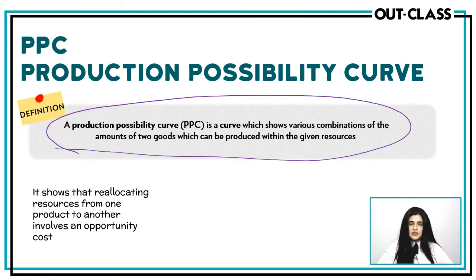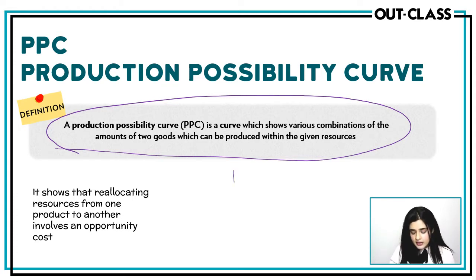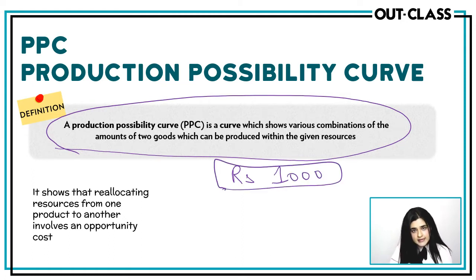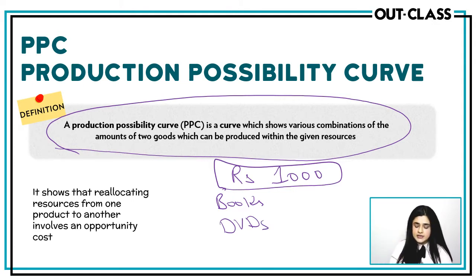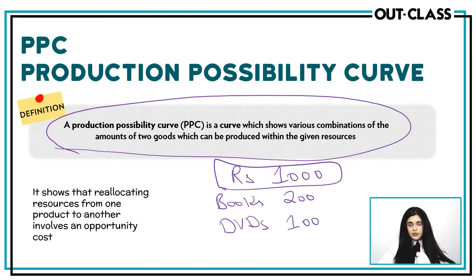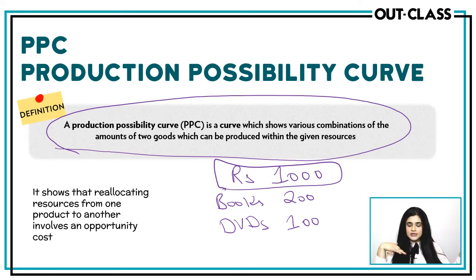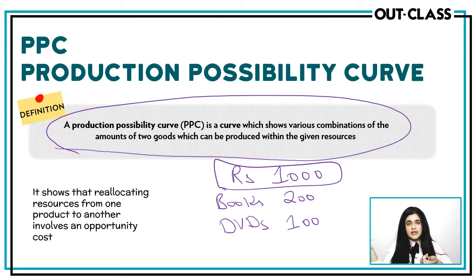To help you understand this, let's start with a simple example. Assume that you have a thousand rupees — this is the resource that you have. You want to decide between buying books or buying DVDs. If a book costs 200 rupees and a DVD costs 100 rupees, then if you decide to buy more books, you will obviously have to let go of some DVDs, and vice versa. You will be incurring an opportunity cost, and this is exactly what happens to businesses as well — when they decide to make more of one product, they may have to let go of another.